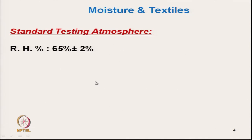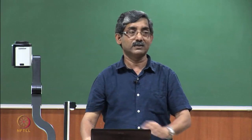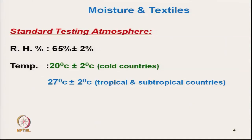Standard testing conditions are specified because otherwise, if we change the humidity or temperature, the test results will be affected. Relative humidity is specified as 65% ± 2% — that is the internationally accepted relative humidity for testing textile material. For temperature, two standards are followed: cold countries use 20°C ± 2°C, while tropical and subtropical countries follow 27°C ± 2°C.